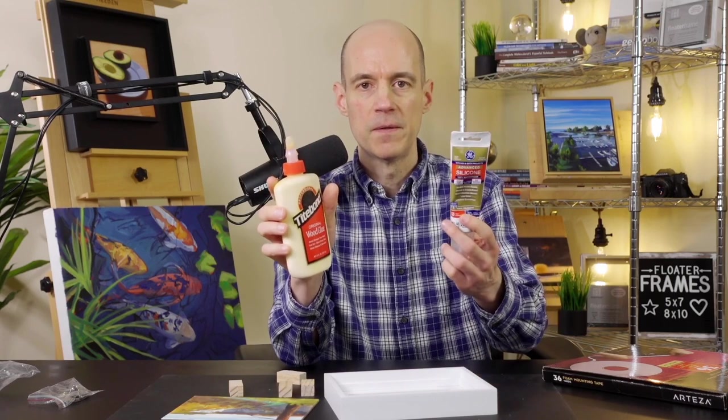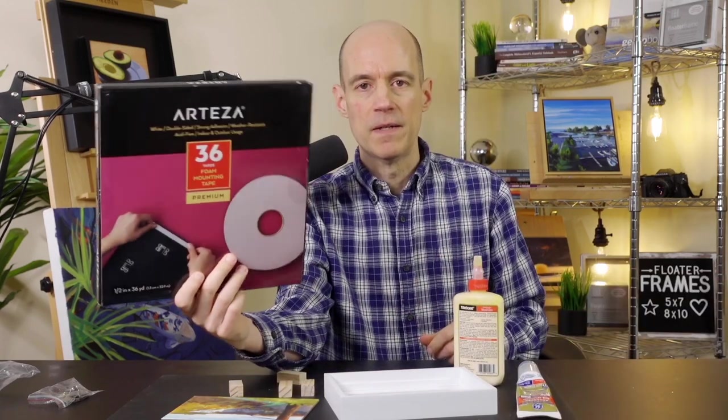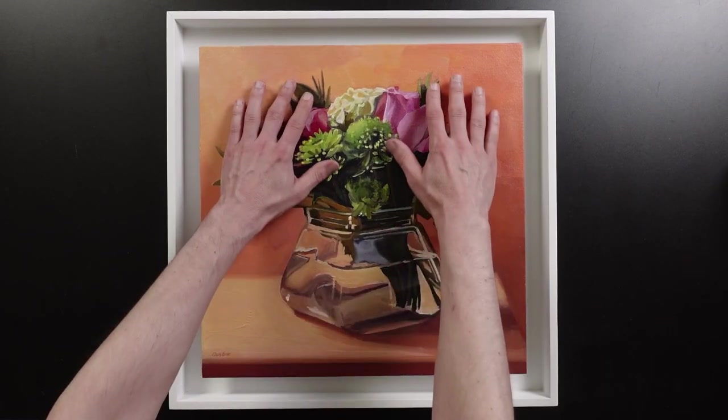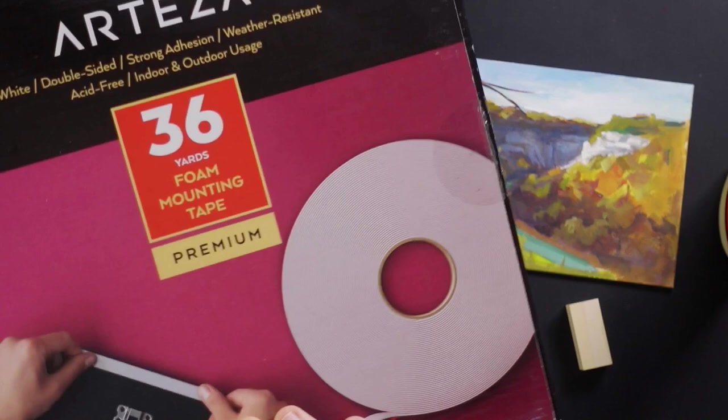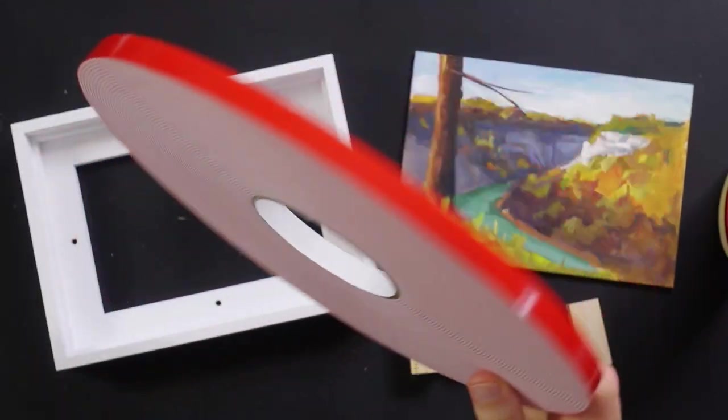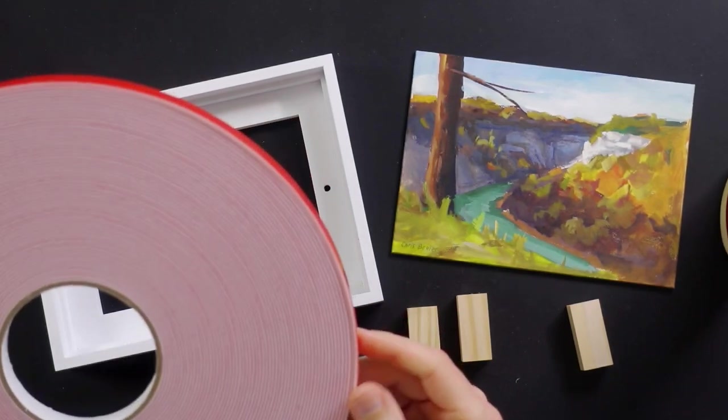For adhesives you have three different options. You can use wood glue, silicone adhesive, or double-sided foam tape. If you're looking for something permanent you could use wood glue. If you ever tried to separate two pieces of wood that have been glued together it's usually the wood that gives out before the glue. Silicone is really strong too but it is reversible and I used it in my duo frame demo. But for this demo I'm going to use double-sided foam tape and I found this tape from Arteza. It's double-sided and acid-free and it can hold up to 2.2 pounds per square inch.